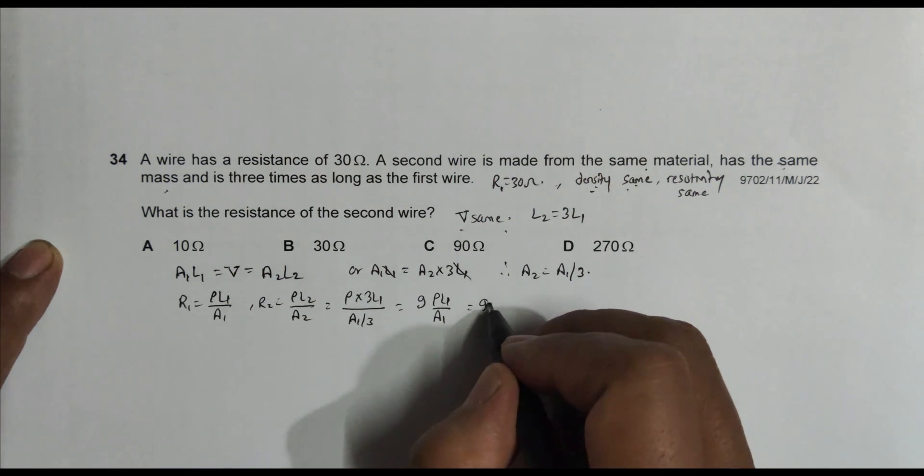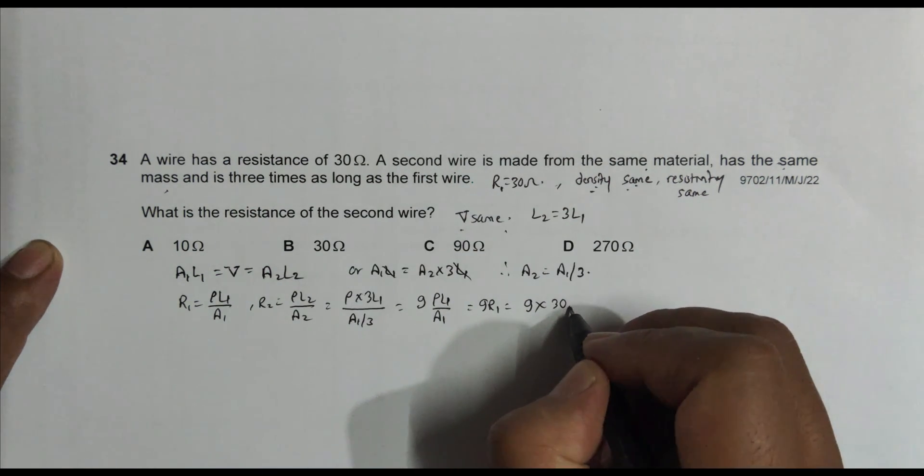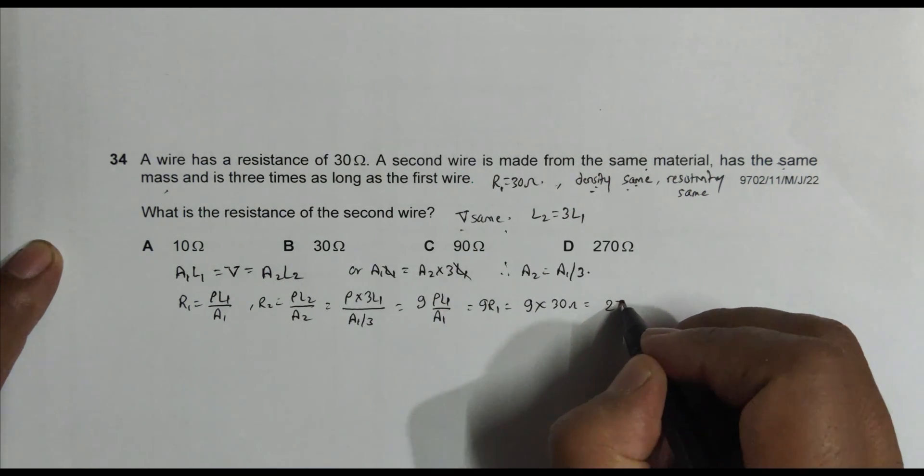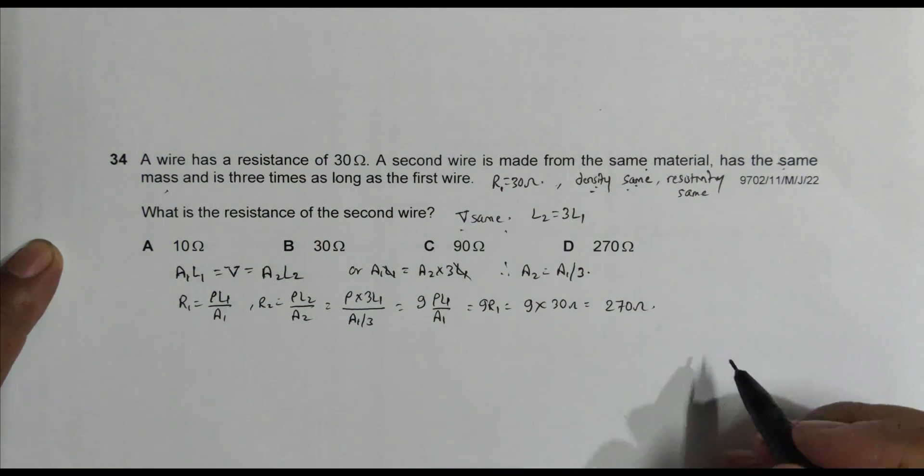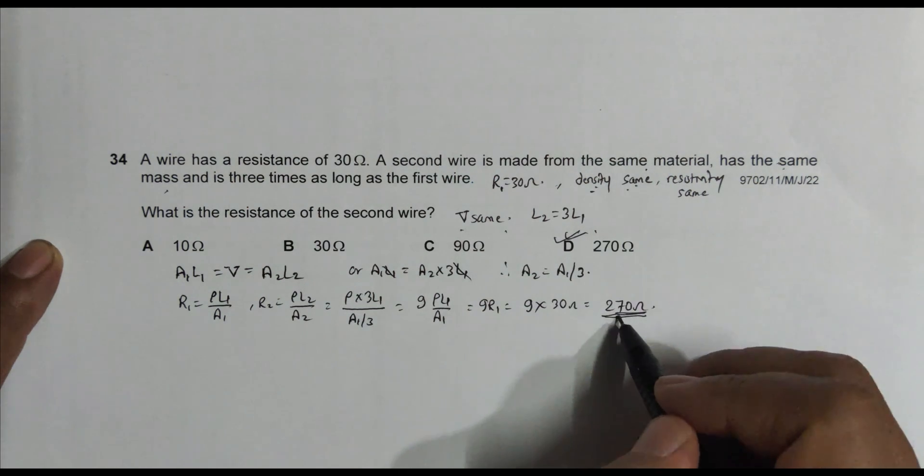So it equals 9R1, which equals 9 into 30 ohm, that's equal to 270 ohms. So that's why the answer to this question is choice D, 270 ohm.